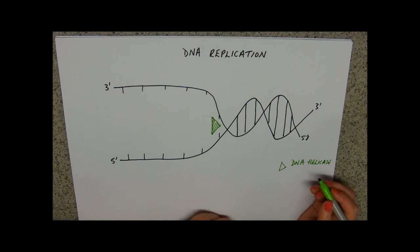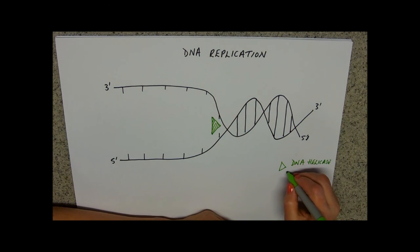I won't tell the rude joke. So DNA helicase, its job is to unwind and unzip DNA. How it does that is it breaks the hydrogen bonds.